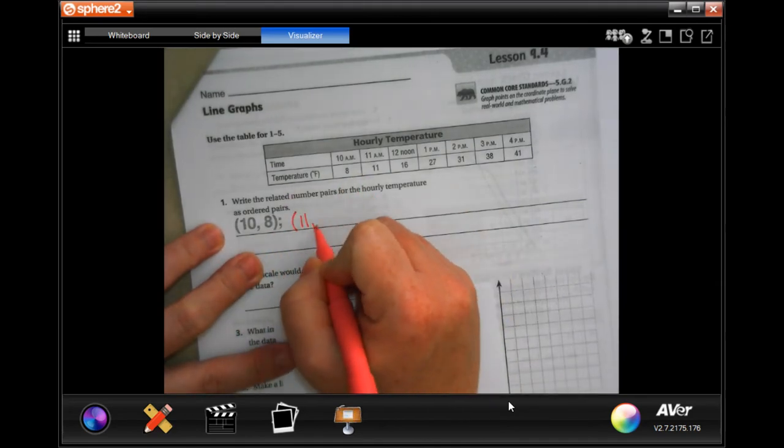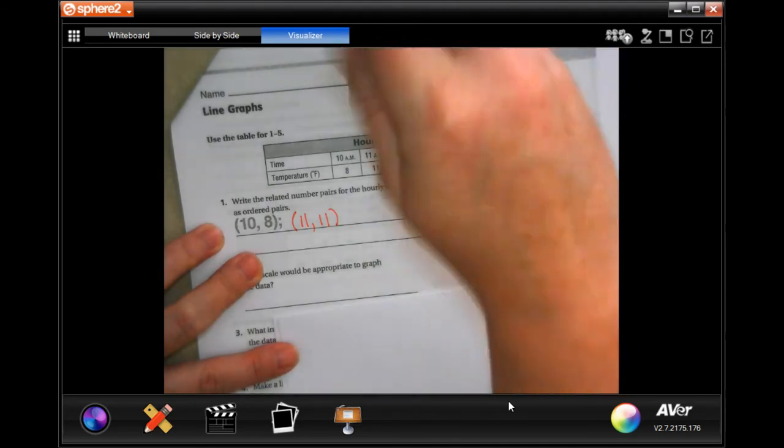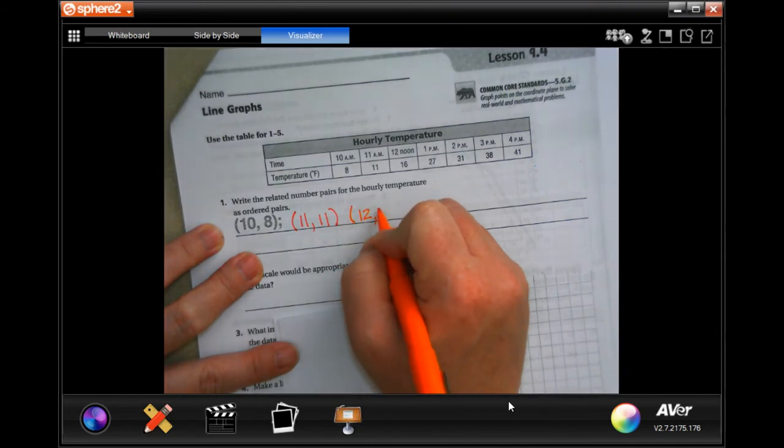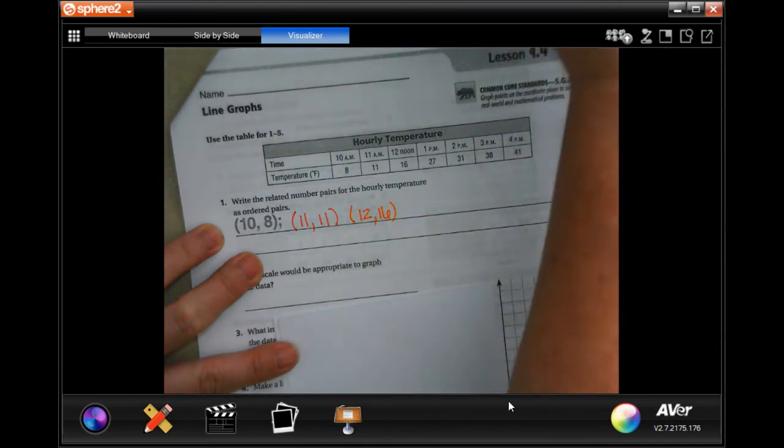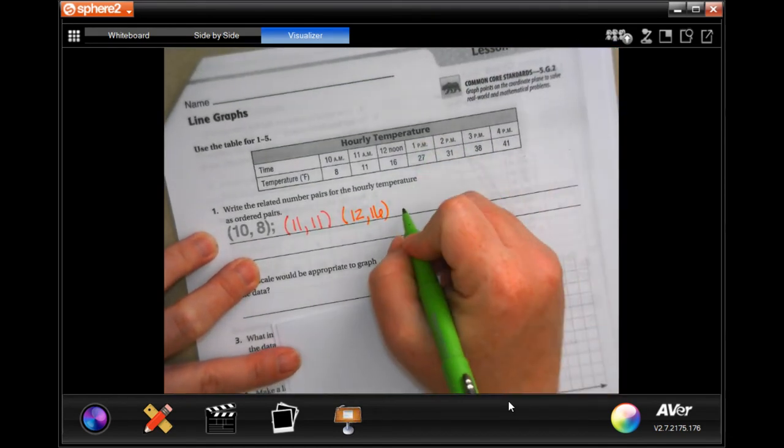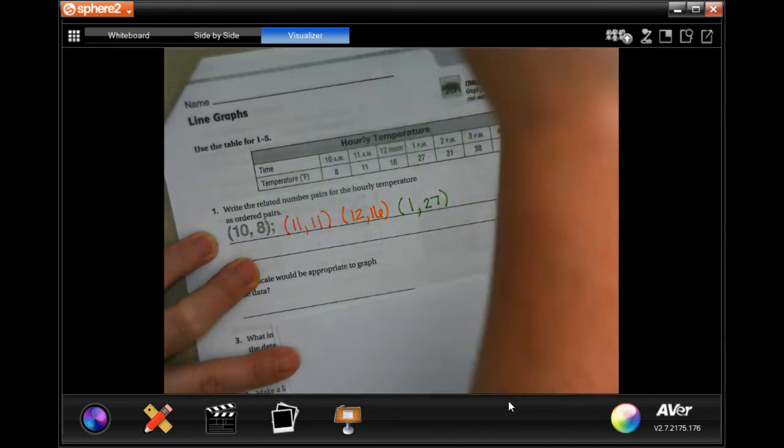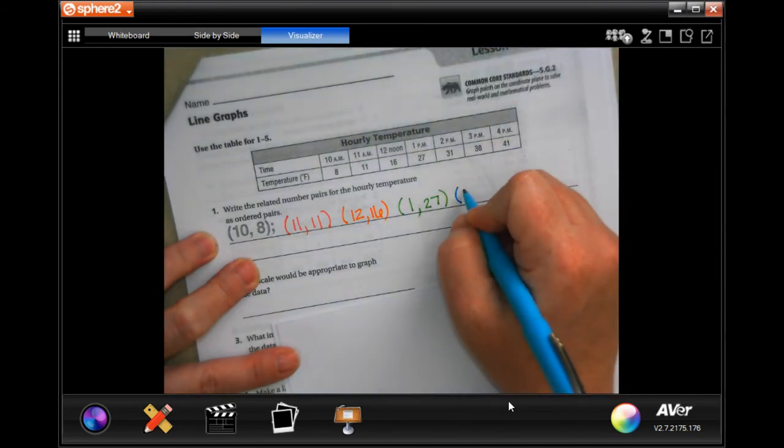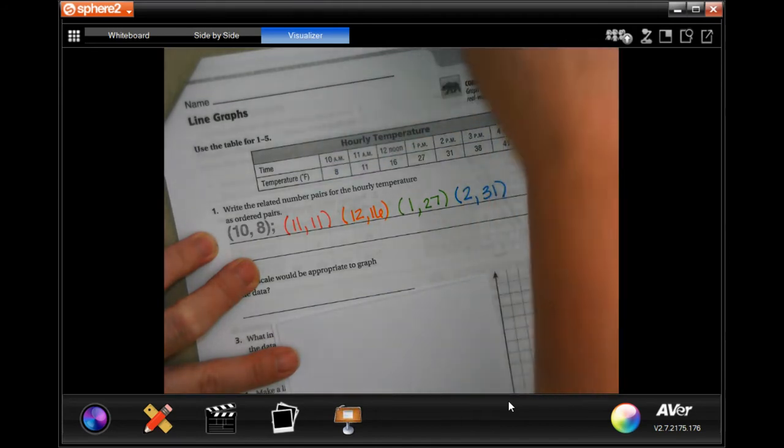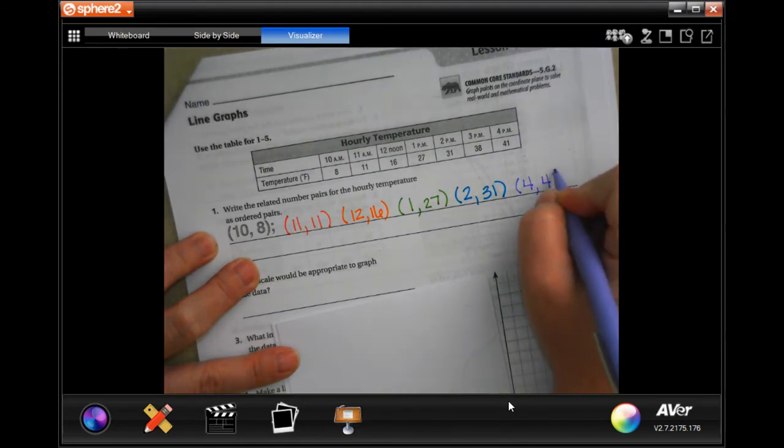So we're going to do 11, 11. We're going to do 12, 16. We're going to do 1, 27. We're going to do 2, 31, and we're going to do 4, 41. Okay, that's it. That's the whole answer to that first one.